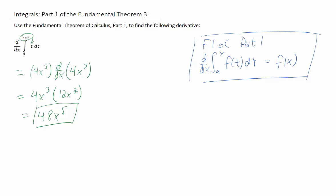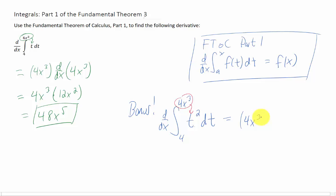Now that was a really fast problem. Sometimes I feel a little bit unsatisfied with that. So let's do a really quick bonus problem. What if instead of just a t here, we had a t cubed? If we want to take the derivative of this integral, the first step is to take this 4x cubed and plug it in for t here. And we get 4x cubed squared, because that t there was squared.